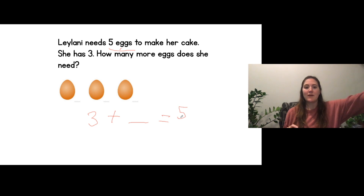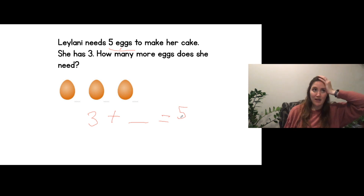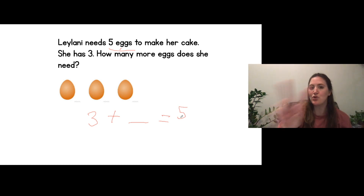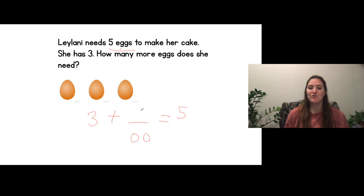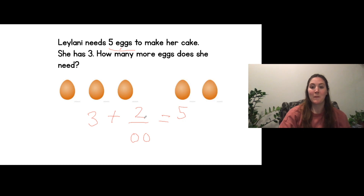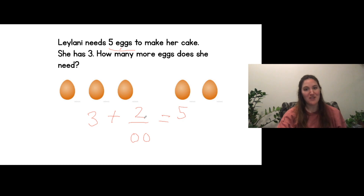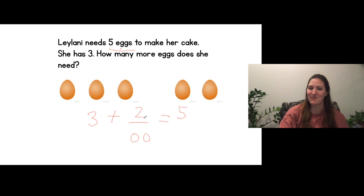Well I can count on from three. So I can count on: three, four, five. So she's going to need two more eggs. I know that there's already three so I can count on until I get to five: three, four, five. So I drew two more circles. Let's see if I was right. Two more eggs! I was correct. Three plus two equals five. Leilani needs two more eggs to have five for her cake.